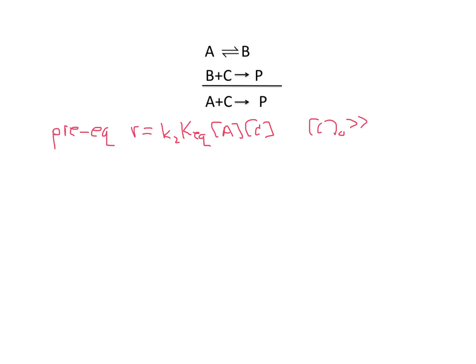And when we used excess C — in other words, when we make this a pseudo-first-order reaction — we find that the rate is equal to K observed times A, but that K observed is linear in the amount of C that I use.